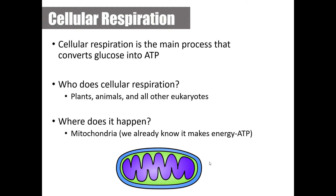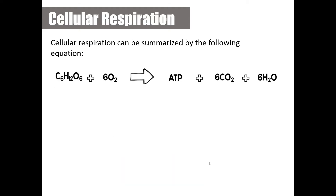Cellular respiration takes place in the mitochondria — we said the mitochondria is the powerhouse of the cell, and now we know why: it generates ATP. The equation for cellular respiration is easy to remember if you know photosynthesis, because it's just flipped — the products of photosynthesis are the reactants for cellular respiration.